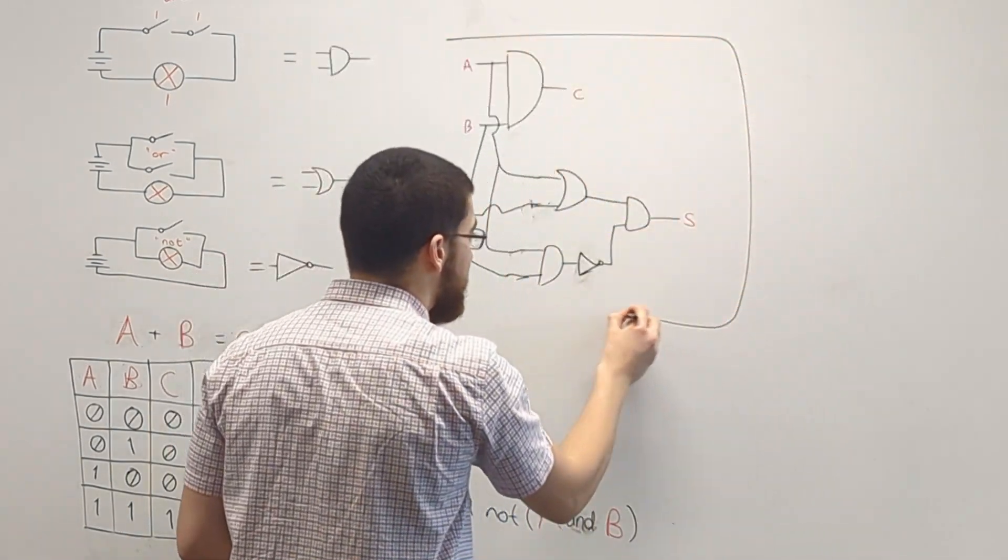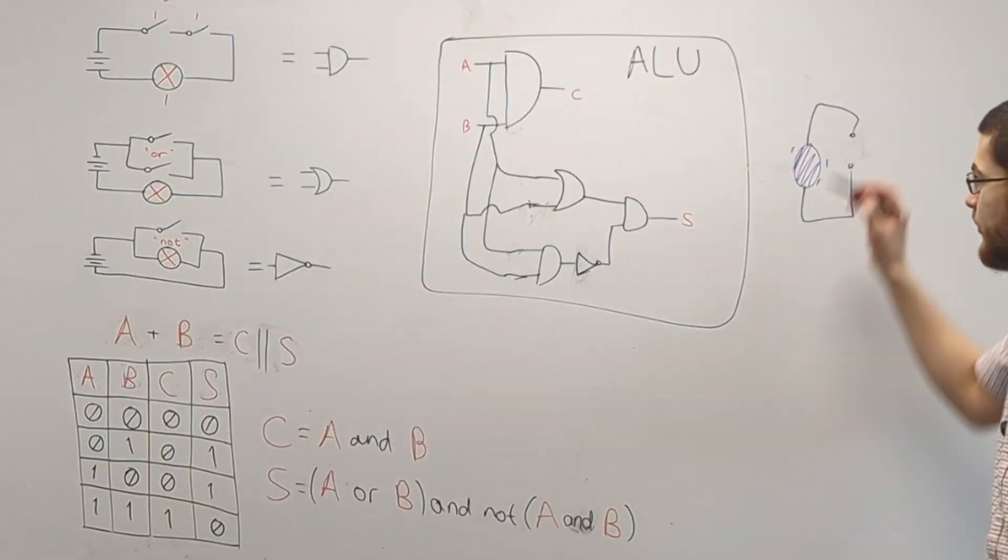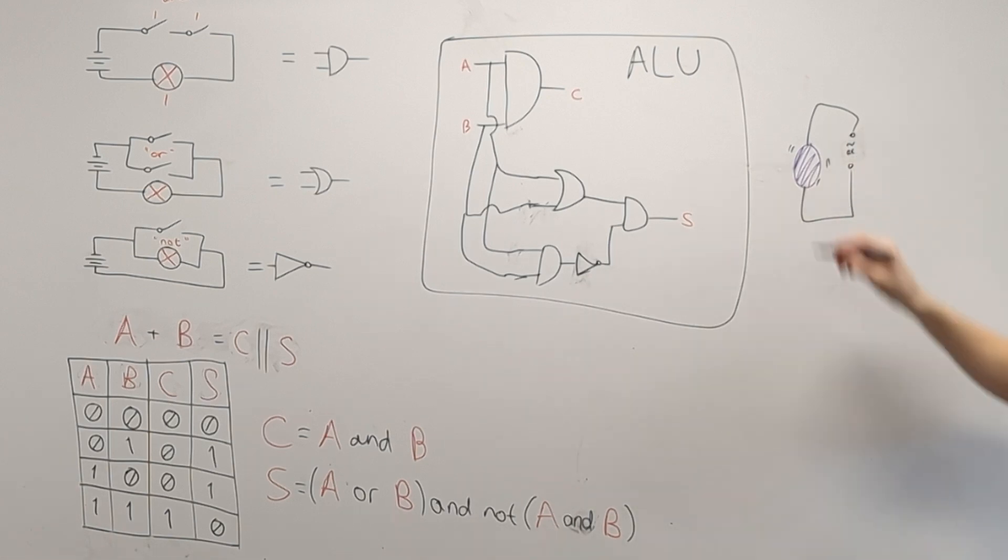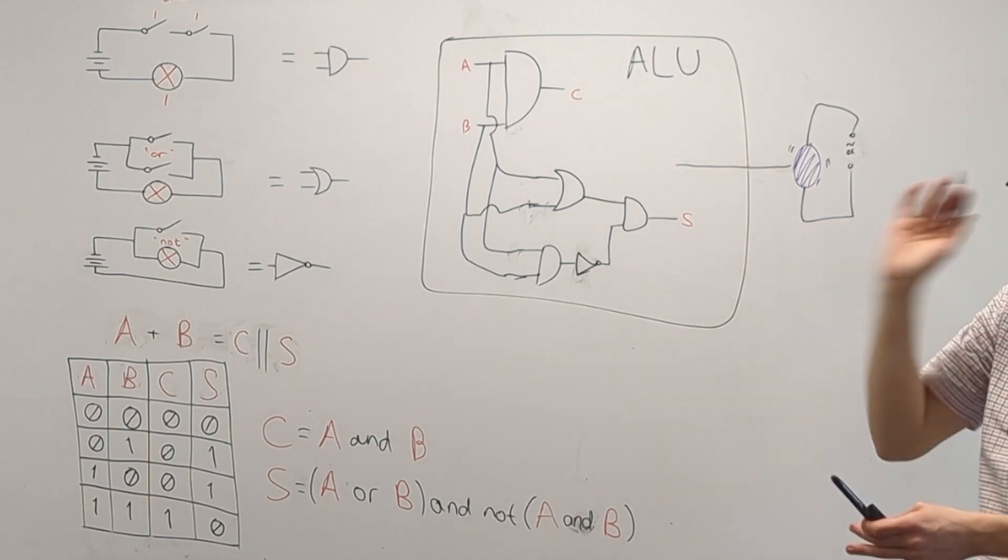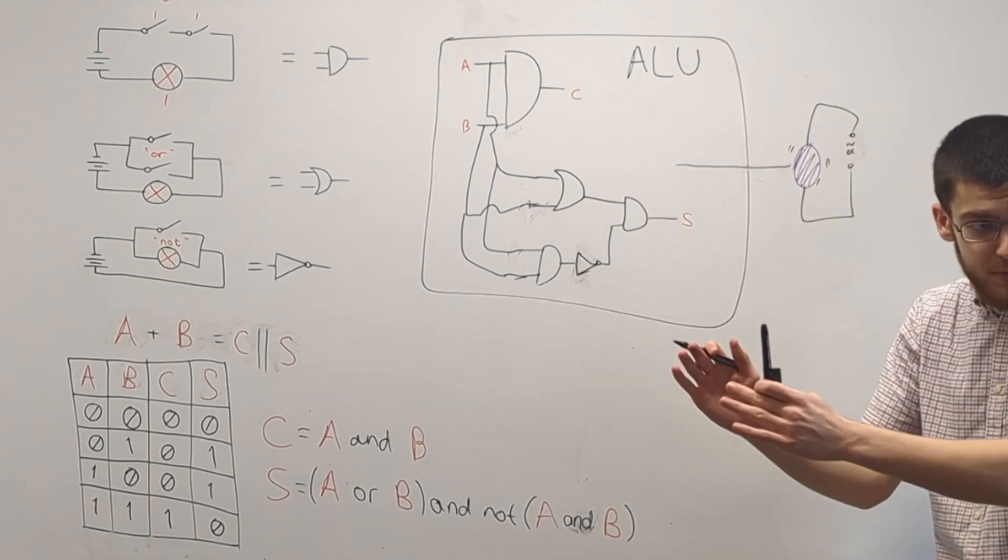This creates an arithmetic logic unit, which basically does calculations for us. Then we found this rock that started vibrating really aggressively when we put a current through it. So basically we hooked it up to this arithmetic logic unit to send pulses billions of times a second to perform billions of calculations per second.